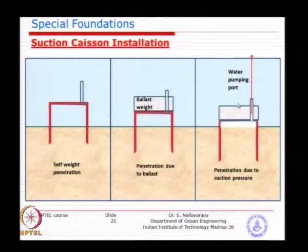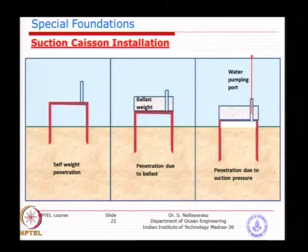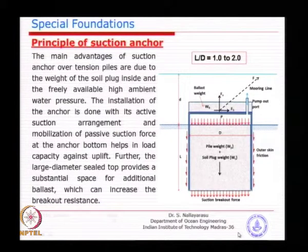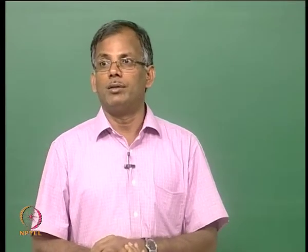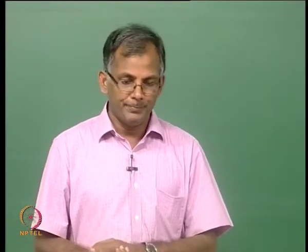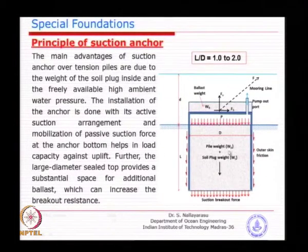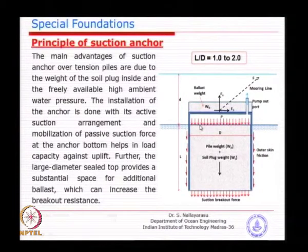Once sufficient penetration and embedment are achieved, you start pumping out water to create a pressure difference which makes the caisson sink. For shallow water like 20 to 30 meters, this is straightforward. But at deep water, you need a higher pumping capacity. Once you finish pumping, you close the valve to permanently lock the seal so water does not re-enter. The larger the water depth, the larger the equivalent head of pressure acting on the top of the soil, compressing it downwards.